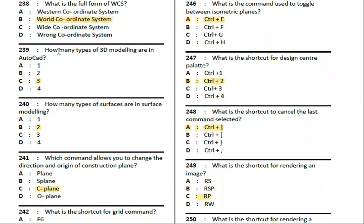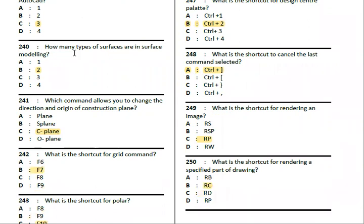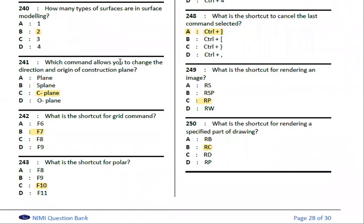How many types of 3D modeling are there in AutoCAD? There are three types of 3D modeling. Next, how many types of surfaces are in surface modeling? There are two types of surfaces in surface modeling. Which command is used to change the direction and origin of the construction plane? The answer is the CPlane command.